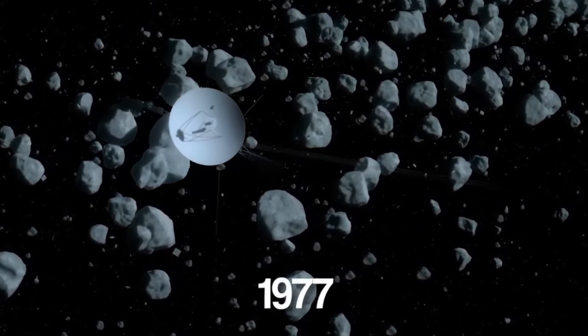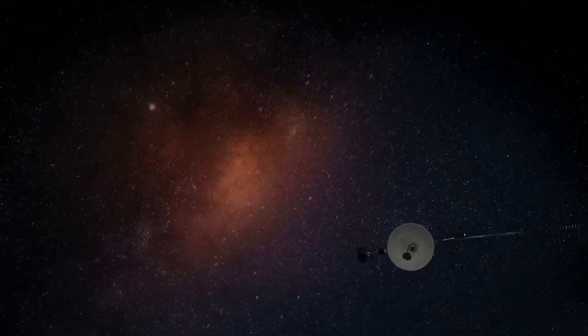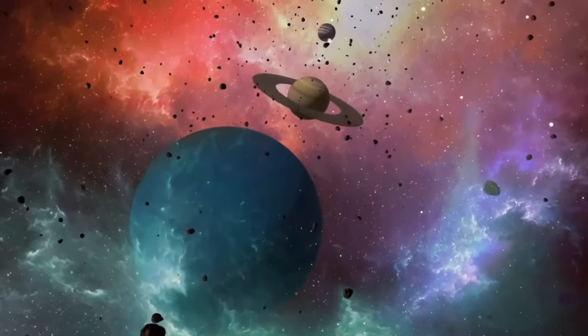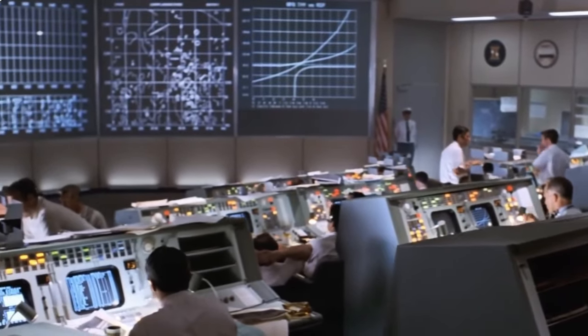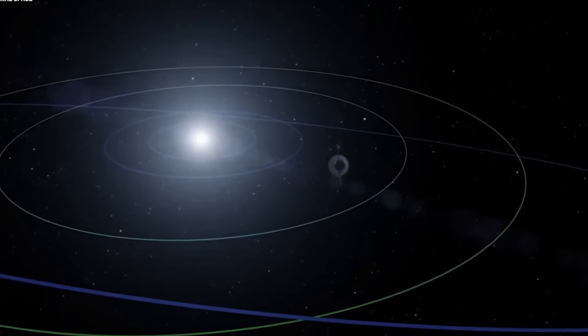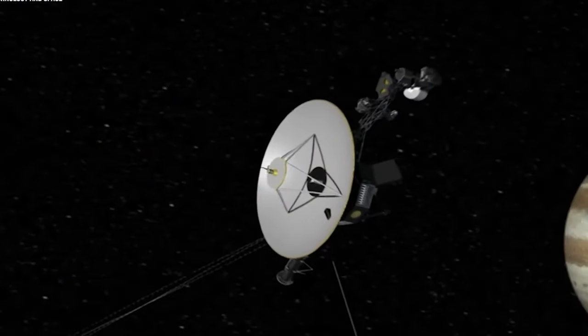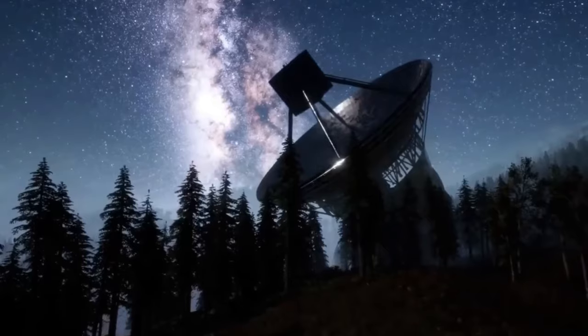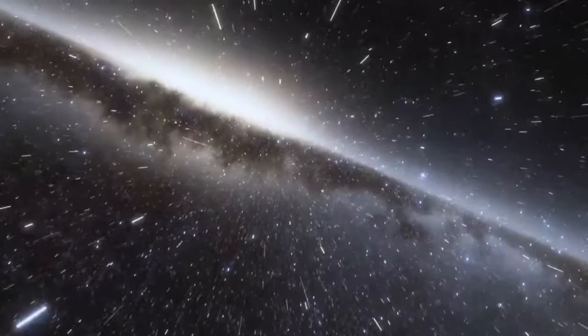By November 12, 1980, Voyager 1 flew by Saturn, unveiling Saturn's epic moon Titan as well as the incredulous ring surrounding the planet. Voyager 1 unmasked the complex structure and dynamics of Saturn's rings, allowing scientists to see the gaps, kinks, waves, and other intricacies in these rings. Voyager 1 also revealed a new ring on Saturn, the G-ring, which was so small it couldn't be seen from Earth.